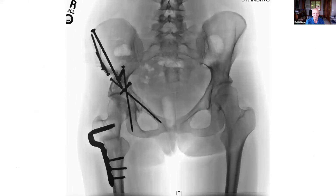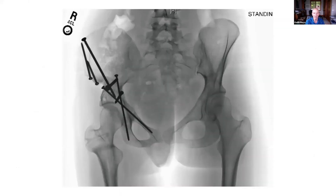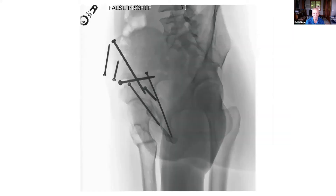This is what she ended up looking like initially and then finally at healing. Her CCD angle is down. One of the problems with a varizing osteotomy is that there is an obligatory, modest leg length discrepancy. I had projected five millimeters on the standing film; it appears to be a bit more than that, although clinically it looks level. So that's a varus derotation osteotomy for the classic association between dysplasia and the valgus and averted neck.